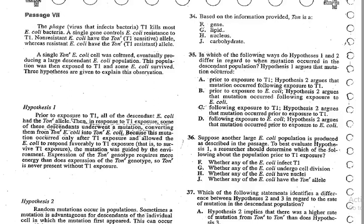Question 35 asks which of the following ways do Hypothesis 1 and Hypothesis 2 differ in regard to when a mutation occurred in the descendant population. They've asked us how both hypotheses differ in regards to the mutation and when it occurs.